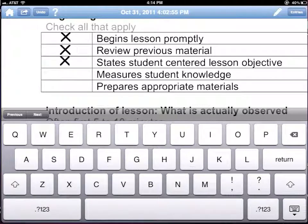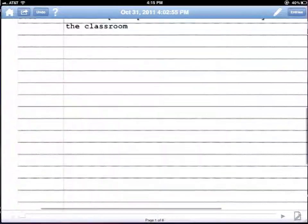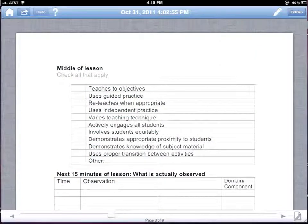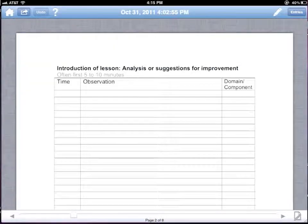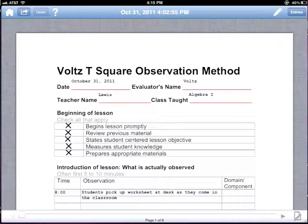As I'm in this particular lesson, I could say that teacher began the lesson promptly. They reviewed previous materials. They stated the lesson objective in a student-centered way. They measured the previous student knowledge, and they had appropriate materials presented. You would continue doing this for all the pages of your observation form. All of these would be filled out.